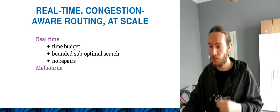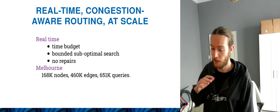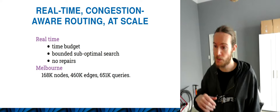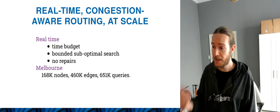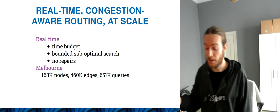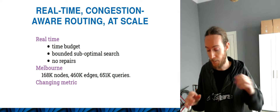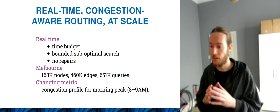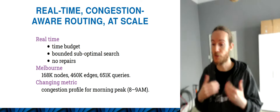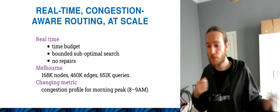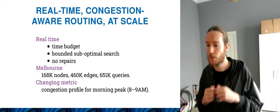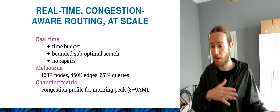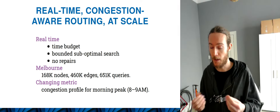We use a fairly decent dataset of Melbourne, where we have a graph of the road network that has about 170,000 nodes, 460,000 edges, and a query set that has about 650,000 queries. What we're really interested in is to try to take congestion into account. Doing routing is fairly straightforward, but doing routing at scale with a changing metric — when the congestion is moving, when traffic on the road is changing — is a lot more challenging.